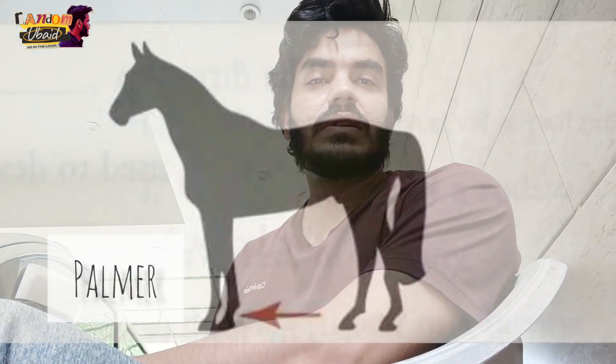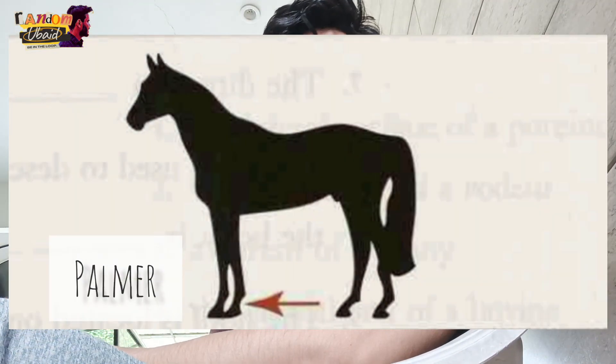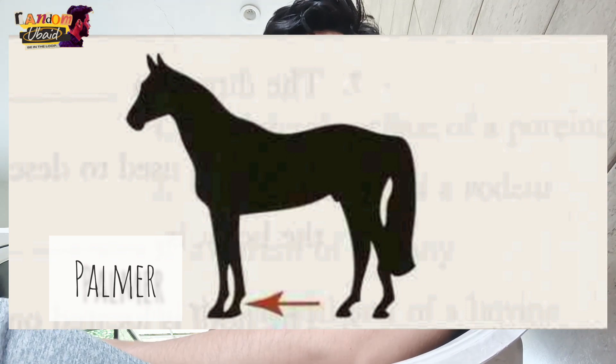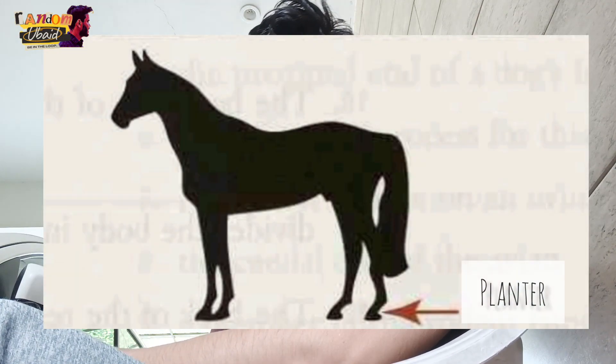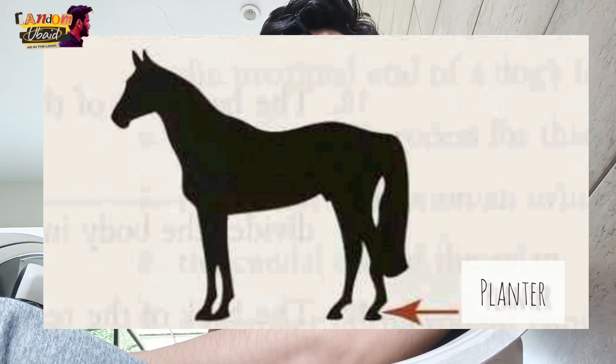Palmar refers to the back of the forelimb distal to the carpus. Plantar refers to the back of the rear feet distal to the tarsus.